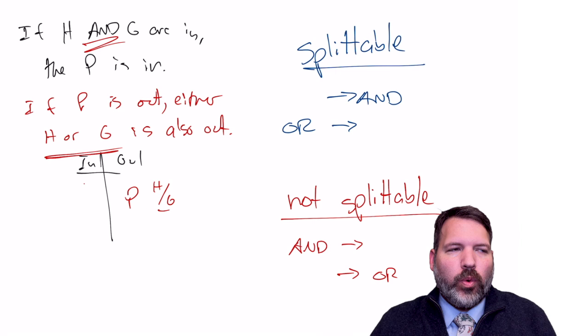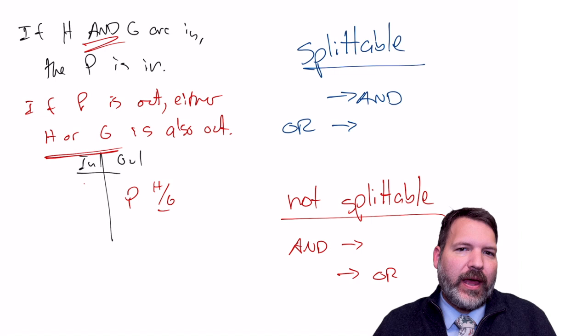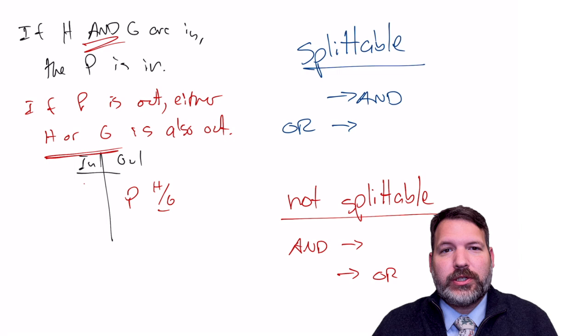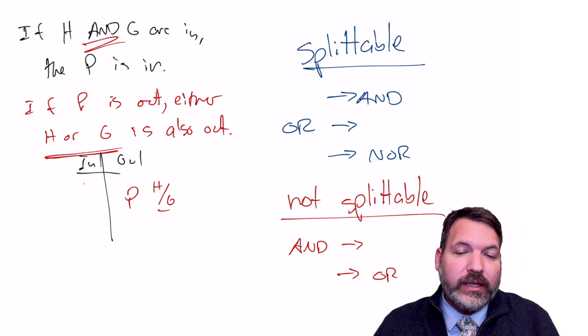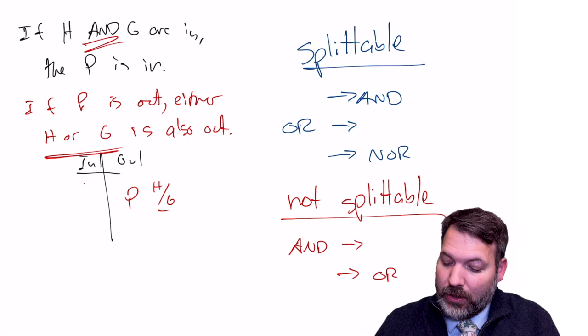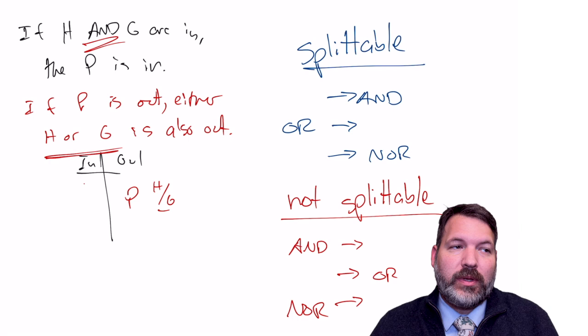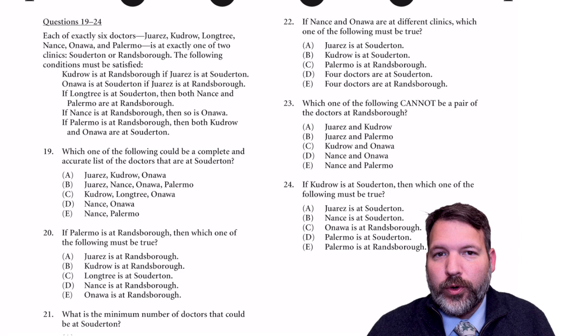There's one other word that comes up: NOR. It's tempting to think NOR follows the same rules as OR, but NOR actually works the same as AND — it's inclusive language meaning something is happening together. So NOR follows all the same rules as AND: if it follows the arrow (consequent side), that's splittable; if it precedes the arrow (antecedent side), it's not splittable.